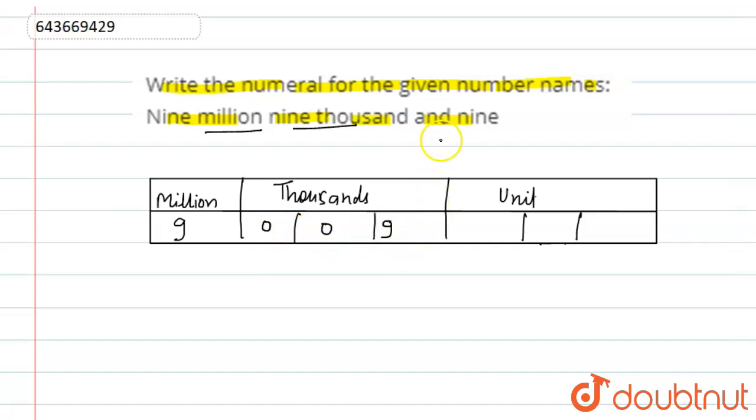This can be written as nine million nine thousand nine. This is our answer. This can be read as ninety lakh nine thousand nine.